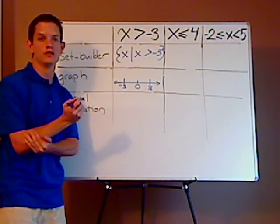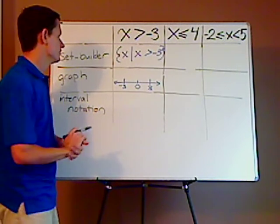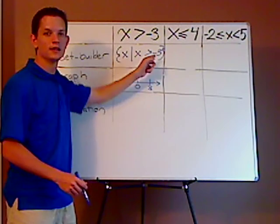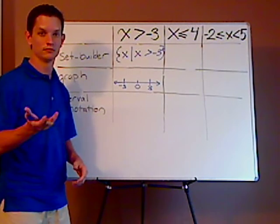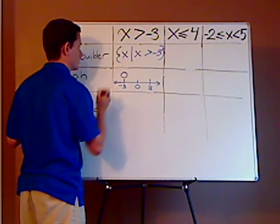Now you can either use parentheses or brackets or open circle and closed circle. I'm going to use open circle, closed circle. Since this is greater than, that means it's going to be an open circle. And it's going to be an open circle at negative three.